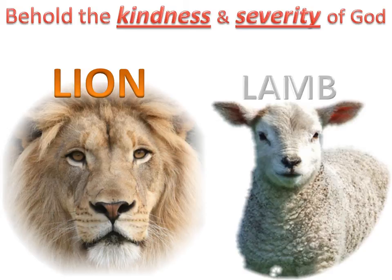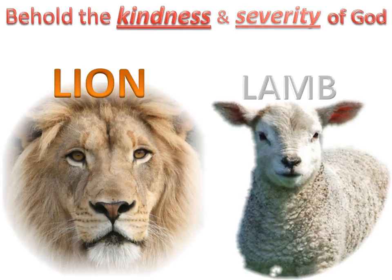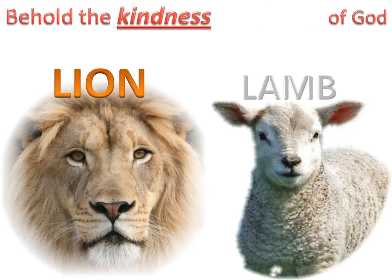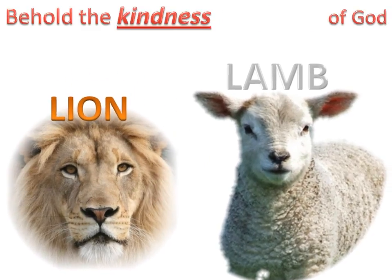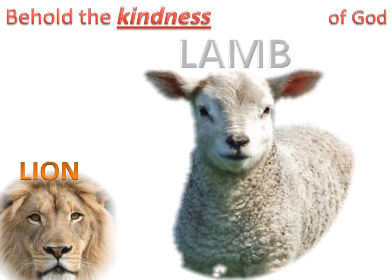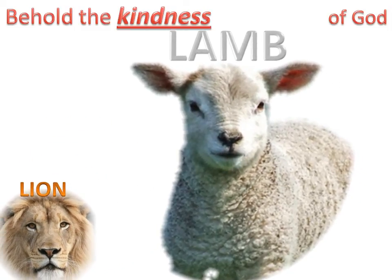In Scripture, we are told to behold the kindness and severity of God, and God is revealed as both a lion and a lamb. But in the teachings of many churches, we see this principle changed to 'Behold the kindness of our God.' The lion is de-emphasized, and most sermons only reveal God as the lamb. This causes an imbalance in doctrine.